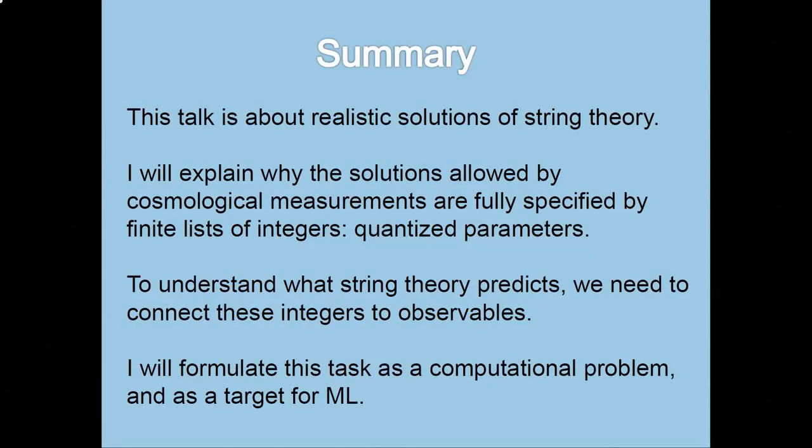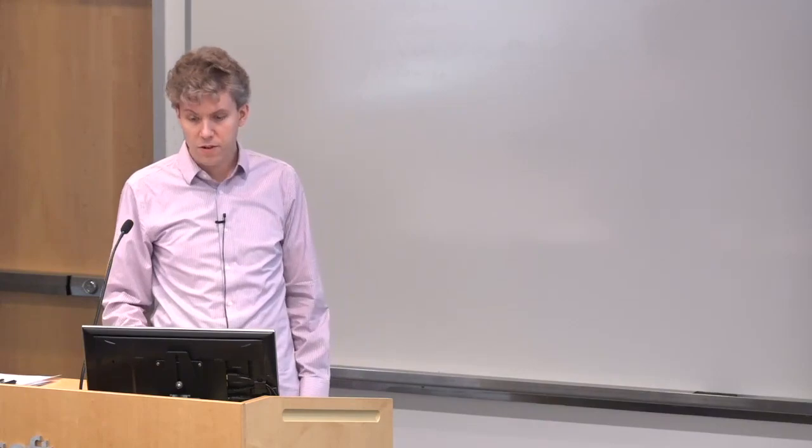What I'd like to explain is the structure of one of the core problems in our subject, which is trying to analyze the string landscape. So the talks about realistic solutions of string theory, and I'll make it clear during the remainder what I mean by realistic. What I aim to do is to explain why the solutions allowed by cosmological measurements are completely specified by finite lists of integers.